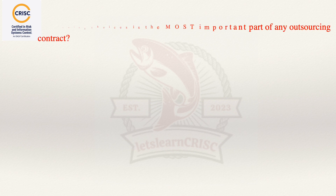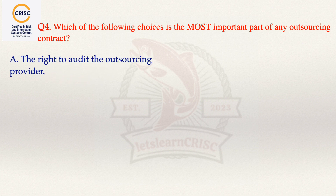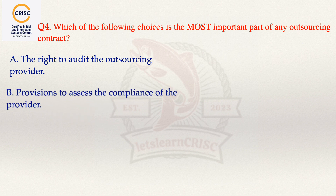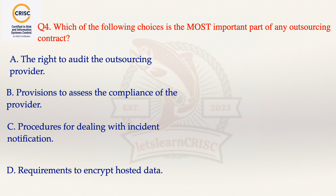The next question states: which of the following choices is the most important part of any outsourcing contract? The options are: option A, the right to audit the outsourcing provider; option B, provision to assess the compliance of the provider; option C, procedures for dealing with incident notification; and option D, requirement to encrypt hosted data. The correct answer is option B, that is provision to assess the compliance of the provider.